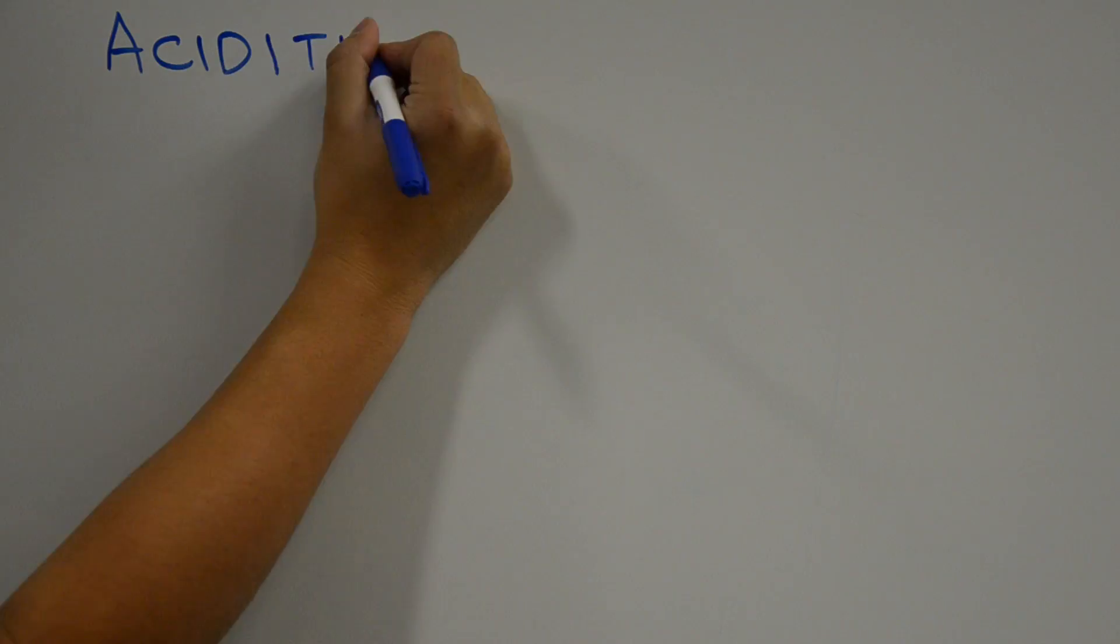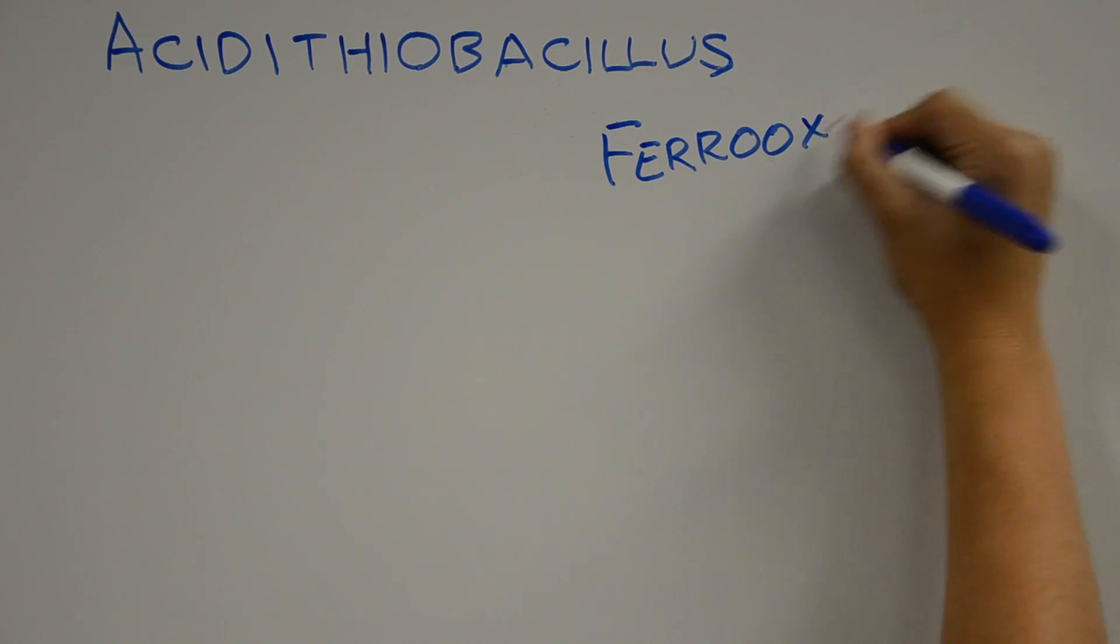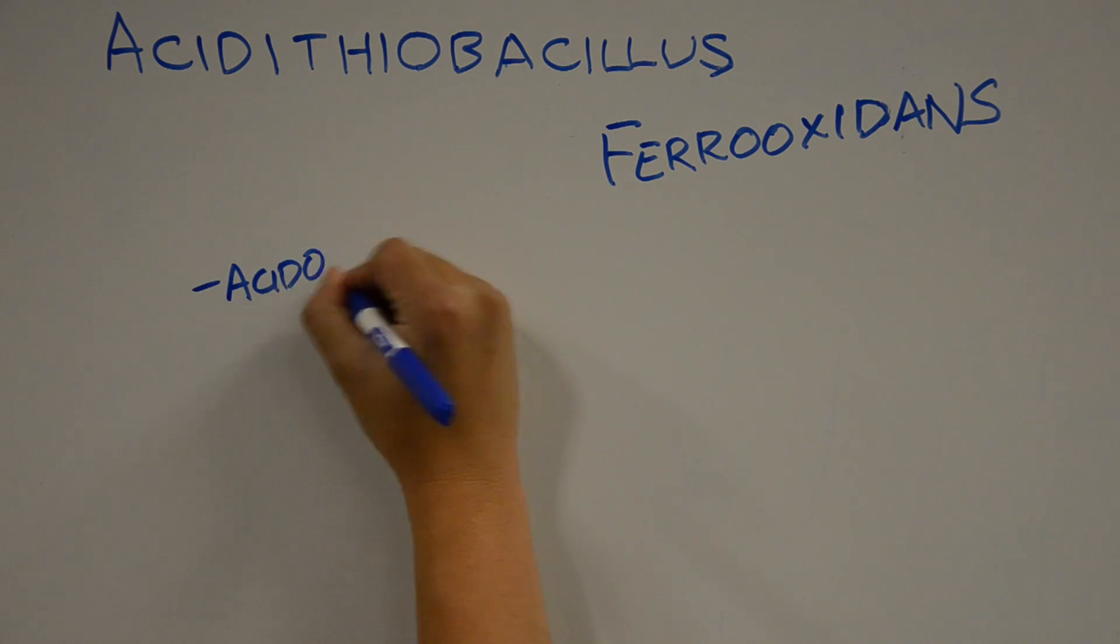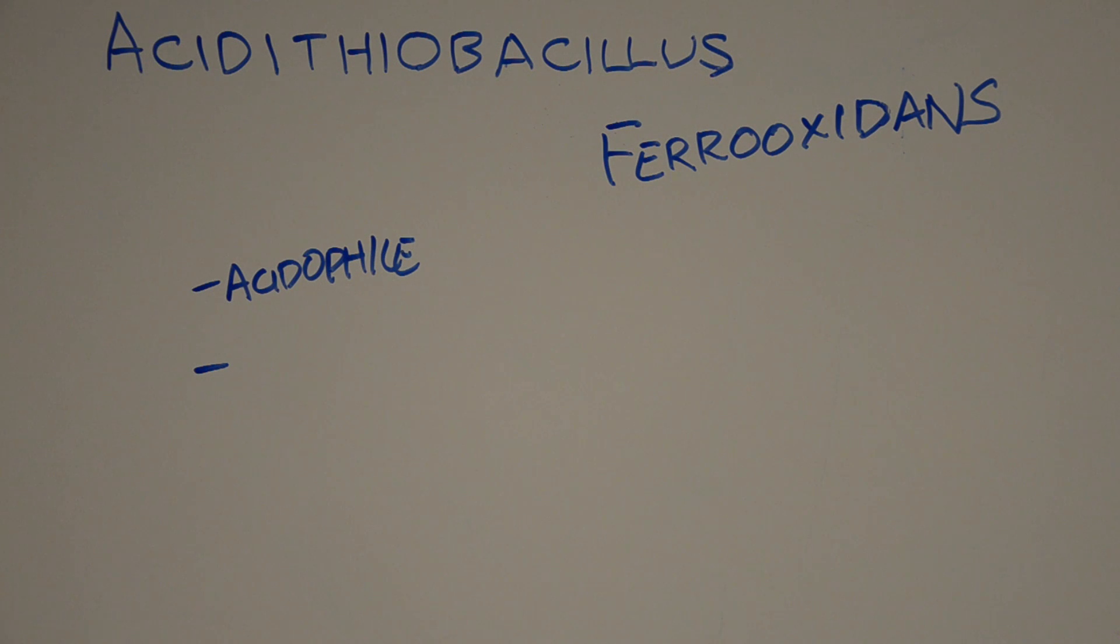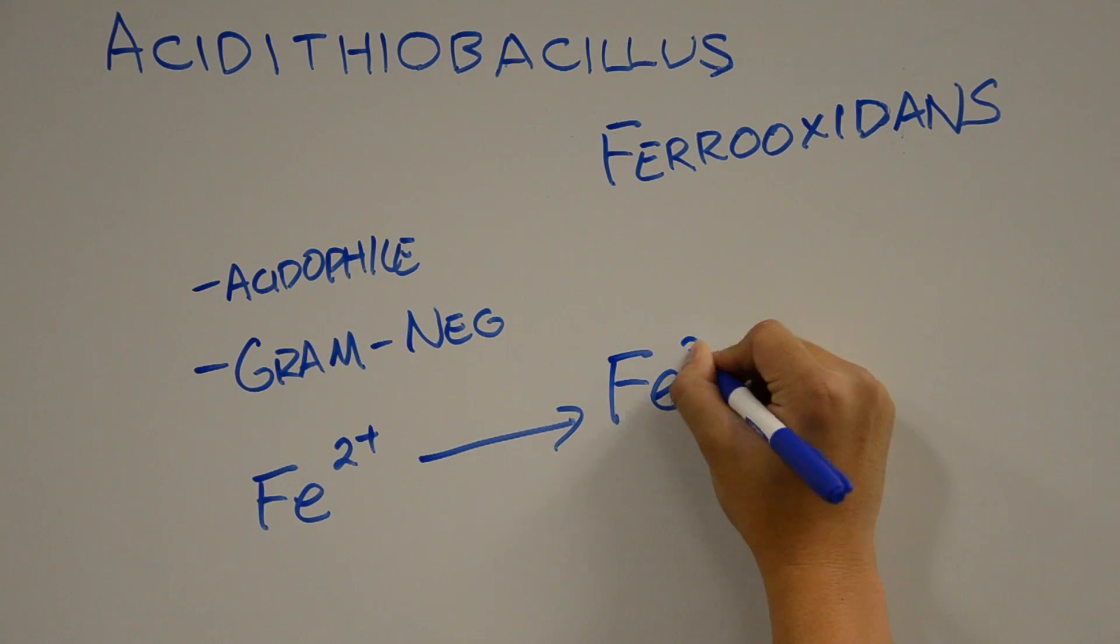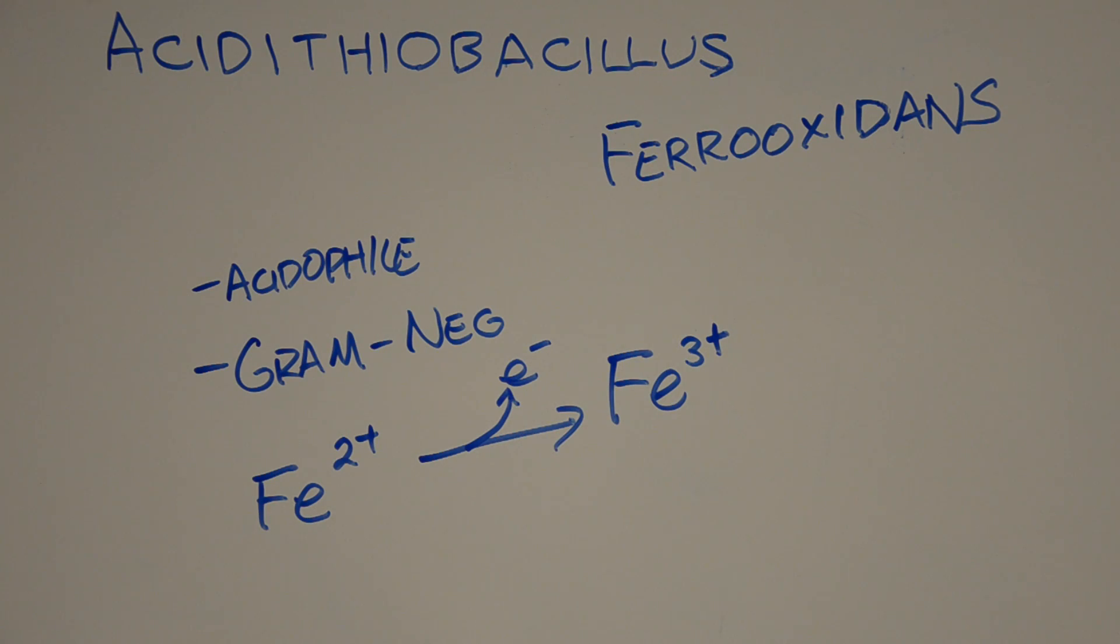This bacteria is called Acidithiobacillus ferrooxidans. It is an extremophile bacteria which thrives in acidic environments, is gram-negative, and obtains its energy from the oxidation of inorganic iron 2 plus ions to iron 3 plus.